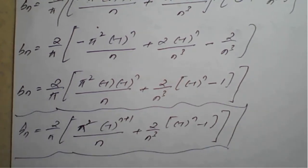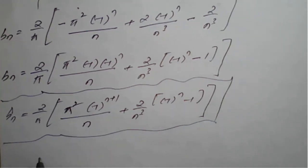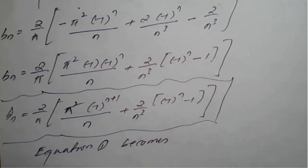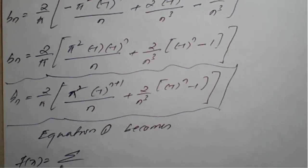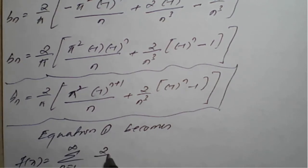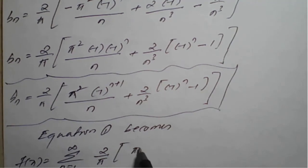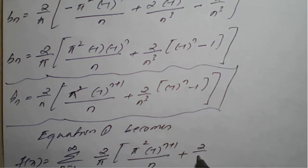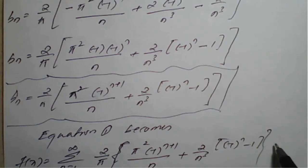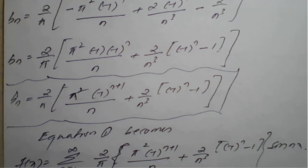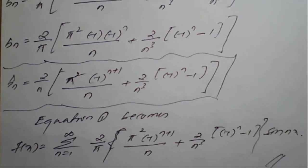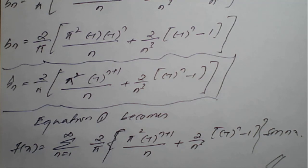Substituting the value of b_n into equation 1, the required sine half range Fourier series of f(x) = x² is: f(x) = summation from n=1 to infinity of (2/pi) times [pi²(−1)^(n+1)/n + (2/n³)((−1)^n − 1)] times sine(nx). This is the required sine half range Fourier series of the given function f(x) = x².